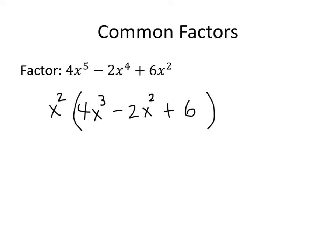There's one more step we can do to pull out a common factor: look at the coefficients. All of the coefficients are even — 4, negative 2, and 6 — so we can pull out a factor of 2. We could have pulled out 2x squared all at once at the beginning. When we factor 2 out of 4, we're left with 2. Factoring 2 out of negative 2 leaves negative 1, which we write as negative x squared. And factoring 2 out of 6 leaves 3. So this is what this polynomial looks like fully factored.